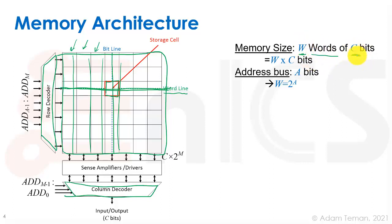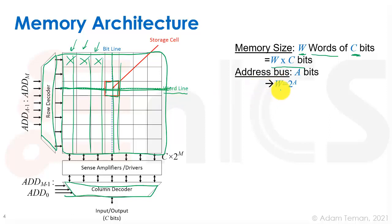If we have W words and each word is C bits — for example 1024 words each of 32 bits — we have a total of W times C bits in the entire memory, meaning W times C SRAM cells in total. To address them we need to select one of the word lines, so taking log₂ of W gives us the number of address bits needed. We call that A, so we have A address bits coming into the memory.